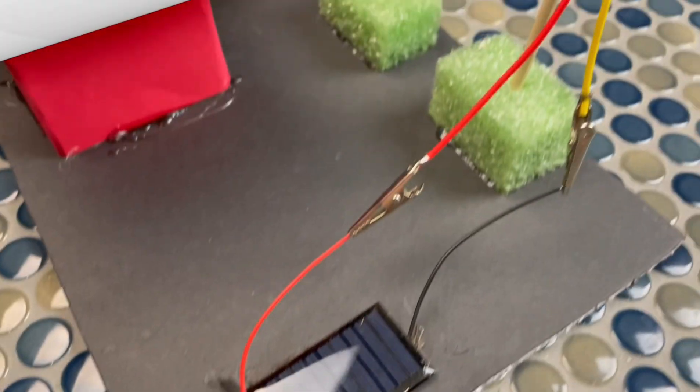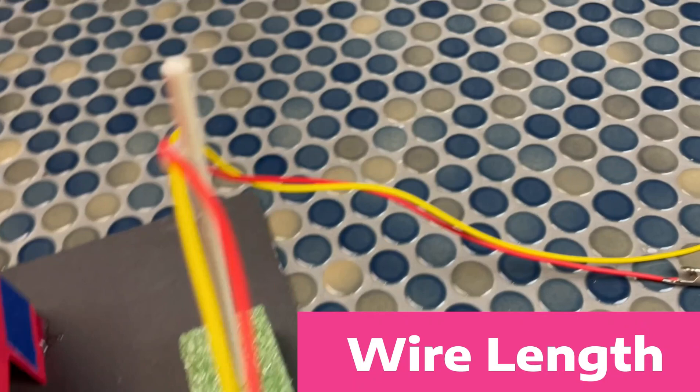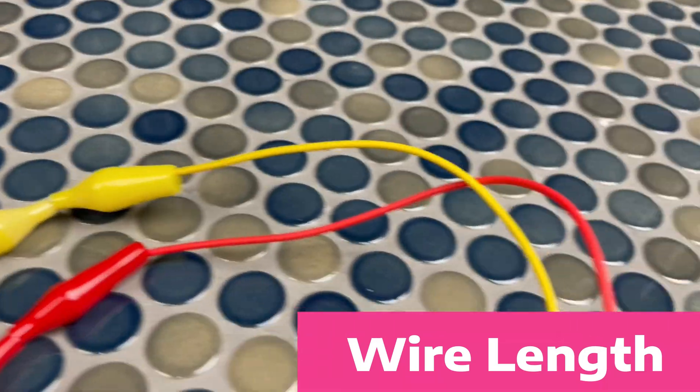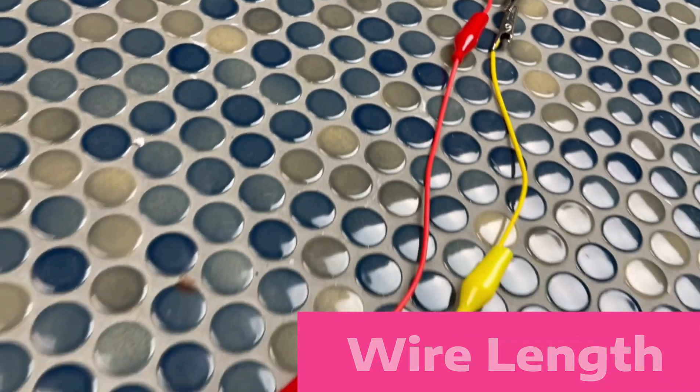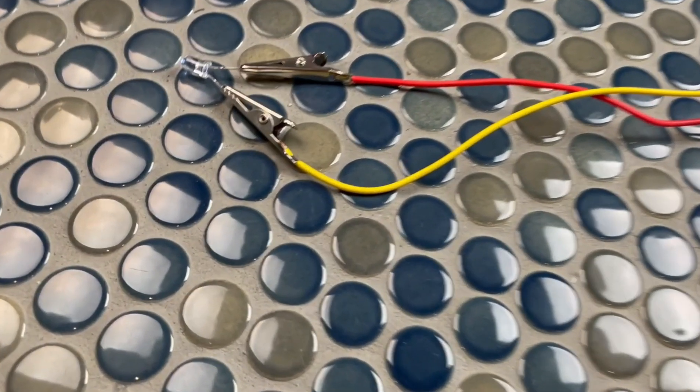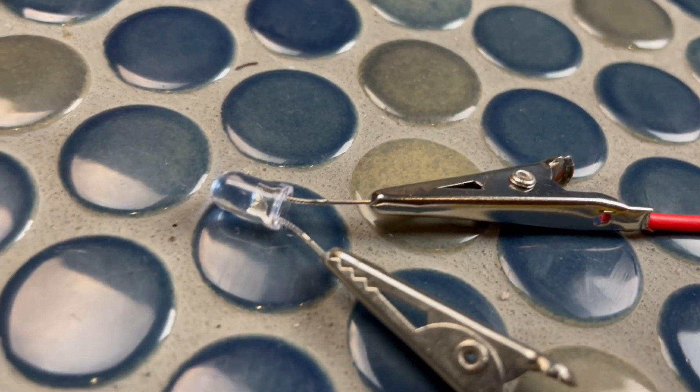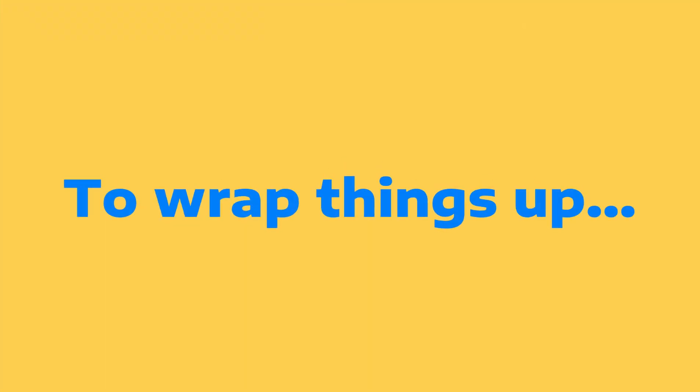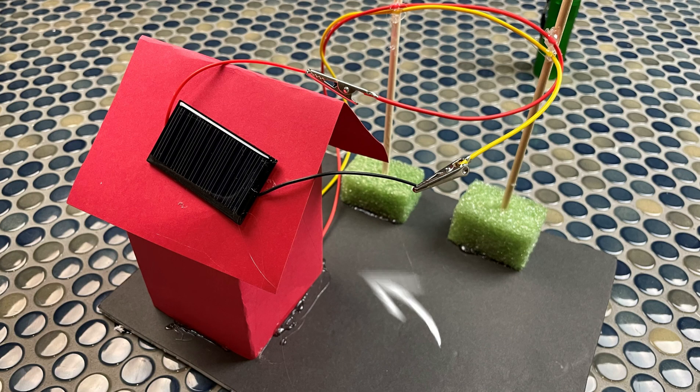Our last trial actually deals with an interesting concept, and it's the fact that power actually gets lost the longer that it has to travel through a wire. Connect a few extra wires and see if you can actually see that concept played out. Does the light look a little bit darker the longer the wires are?